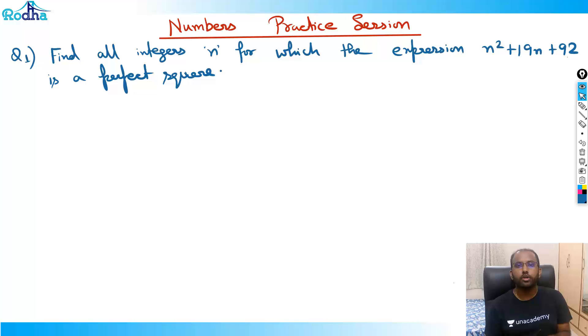I've divided quant into five modules: numbers, algebra, geometry, arithmetic, and PNC probability binomial theorem. These are five modules in which we will be doing practice sessions for CAT 2020.